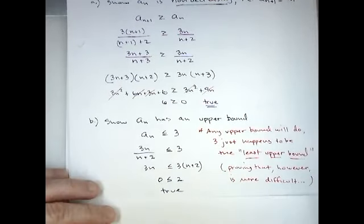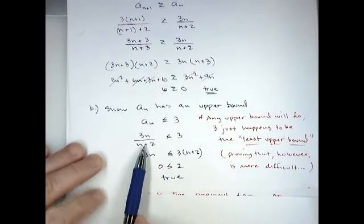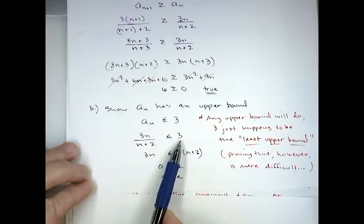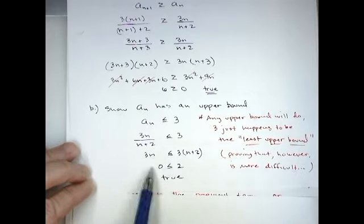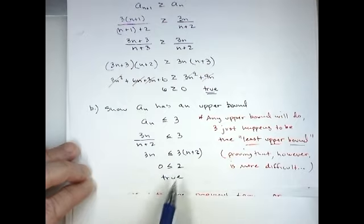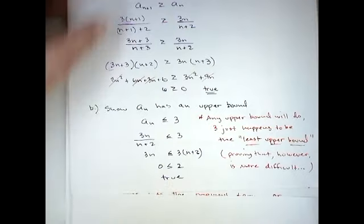To show the upper bound, we set 3n/(n+2) ≤ 3. Multiplying across gives the true inequality 0 ≤ 6, confirming that 3 is an upper bound for the sequence.